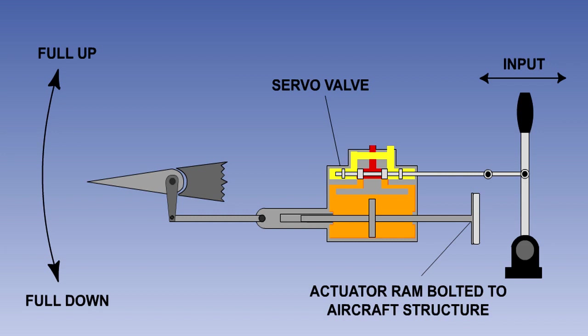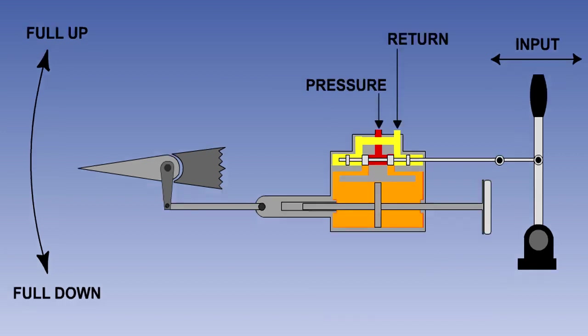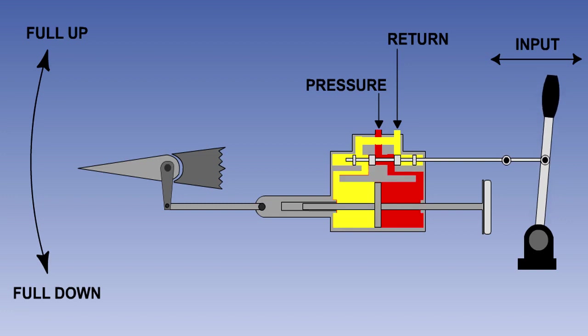The pilot's control only operates the servo valve. In our example here, the pilot pushes the control column forward. When the column is pushed forward, the servo valve is moved over to the right by the control linkage. This action opens the right hand port of the actuator to hydraulic pressure, while opening the left hand port to return.